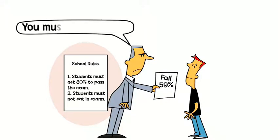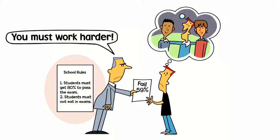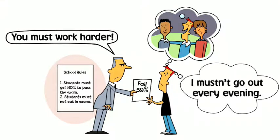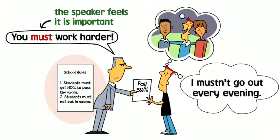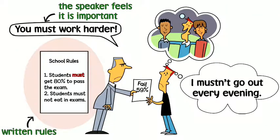You must work harder. I mustn't go out every evening. We use must to say something is essential or a rule. We often use must when the speaker feels that it is important to do something. We also use must for written rules. We use must not or mustn't to mean don't do something.